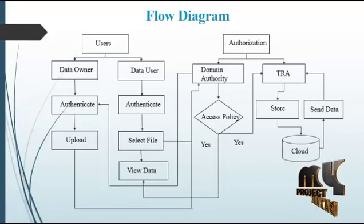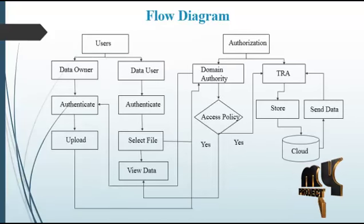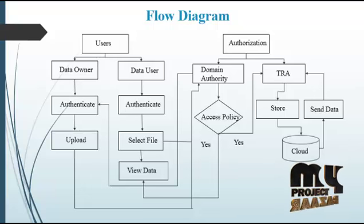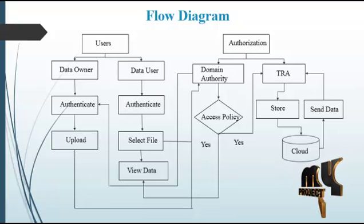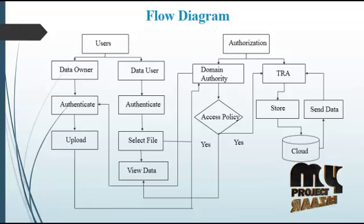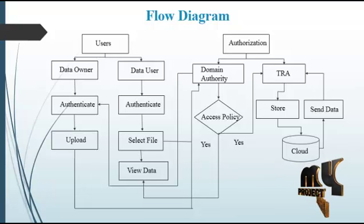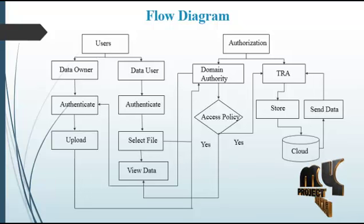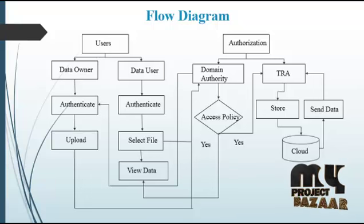This is the flow of our project. In our process, there are the data owner, the data user, and the authorization. For authorization, there are two main entities: the domain authority and the DRA, which is the trusted root authority.